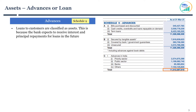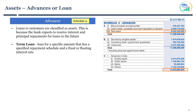Let's review a few line items in detail, starting with term loans. A term loan is a loan for a specific amount that has a specified repayment schedule and a fixed or floating interest rate. An example of a term loan could be a business borrowing money to buy assets like a factory, machines, and so on.